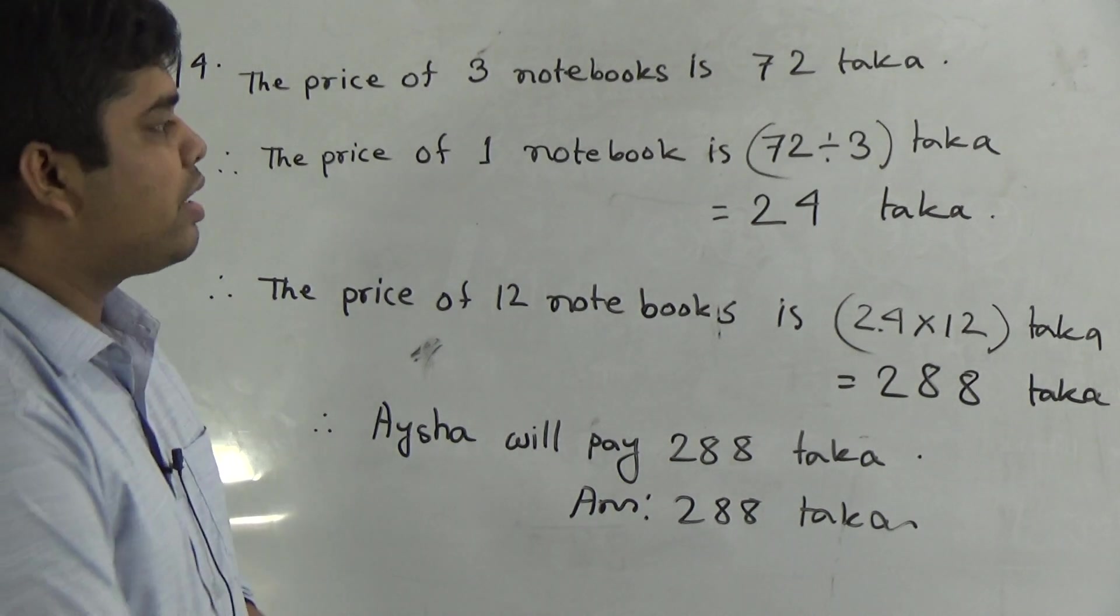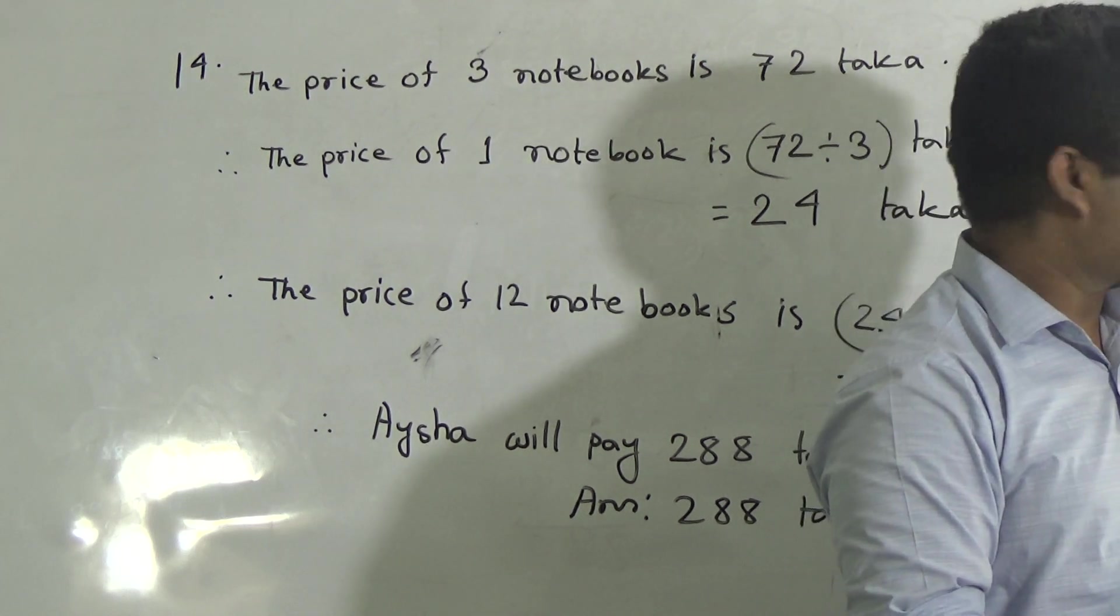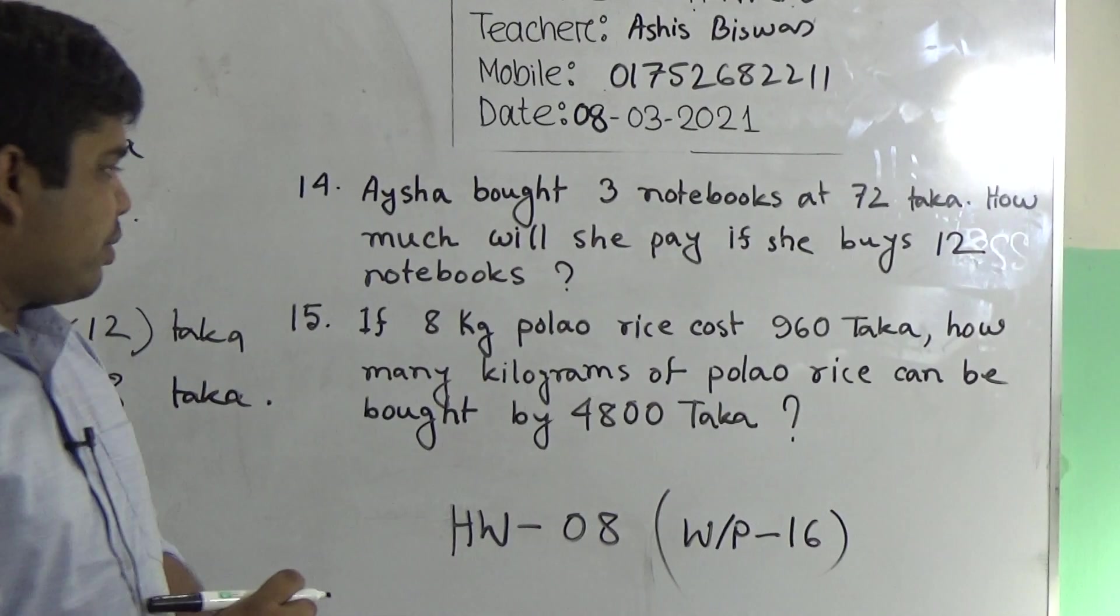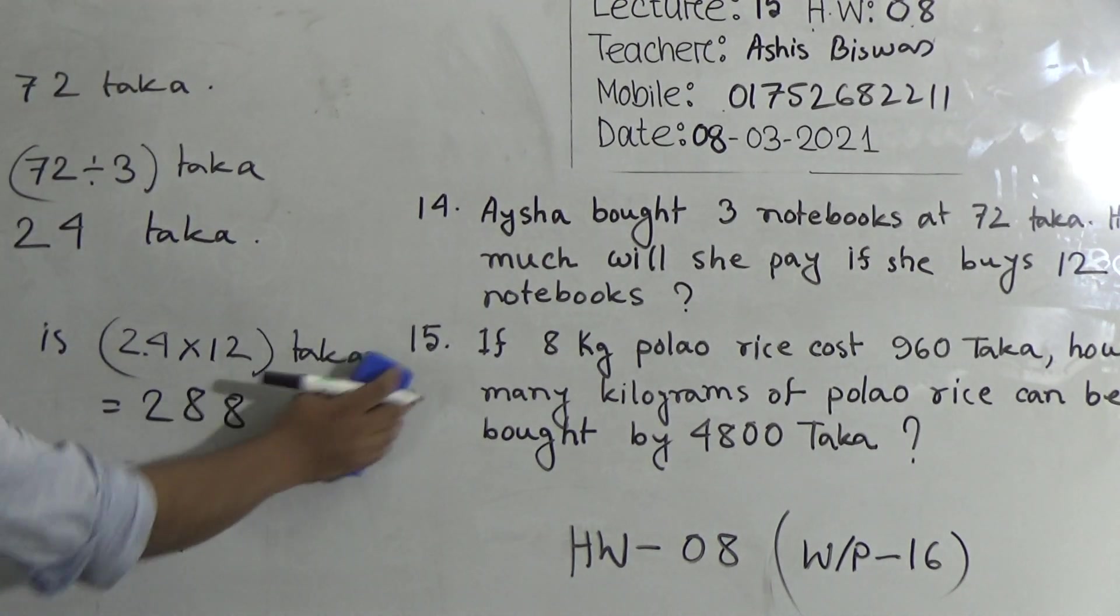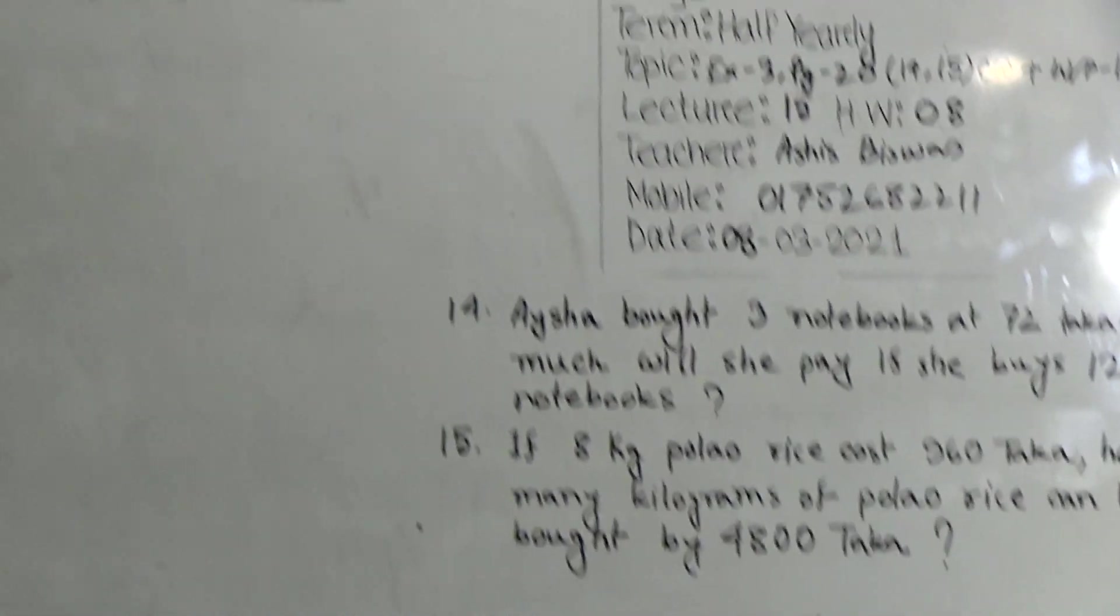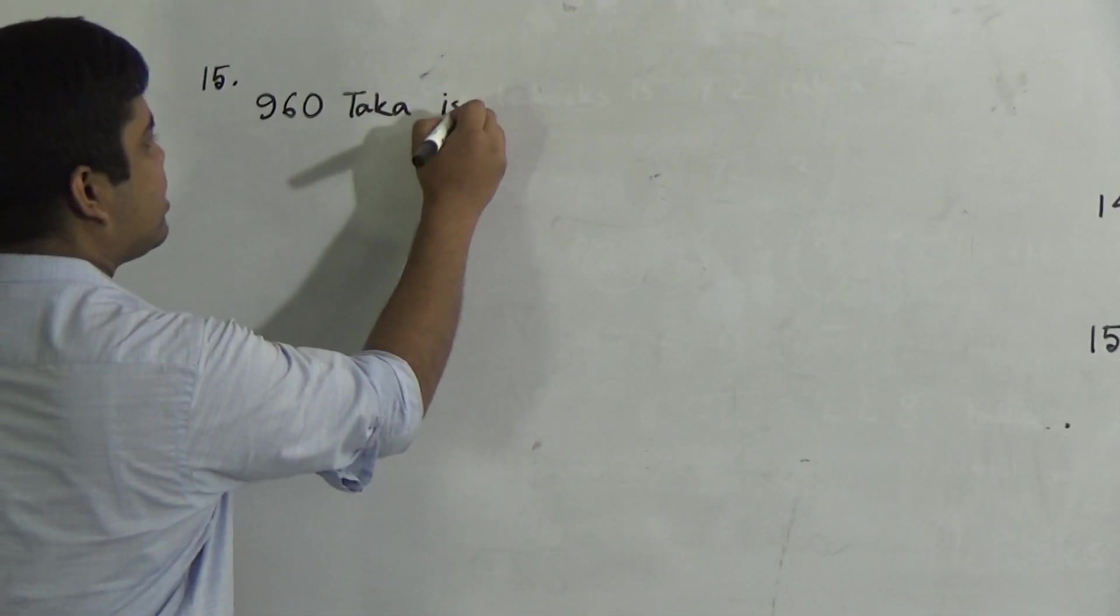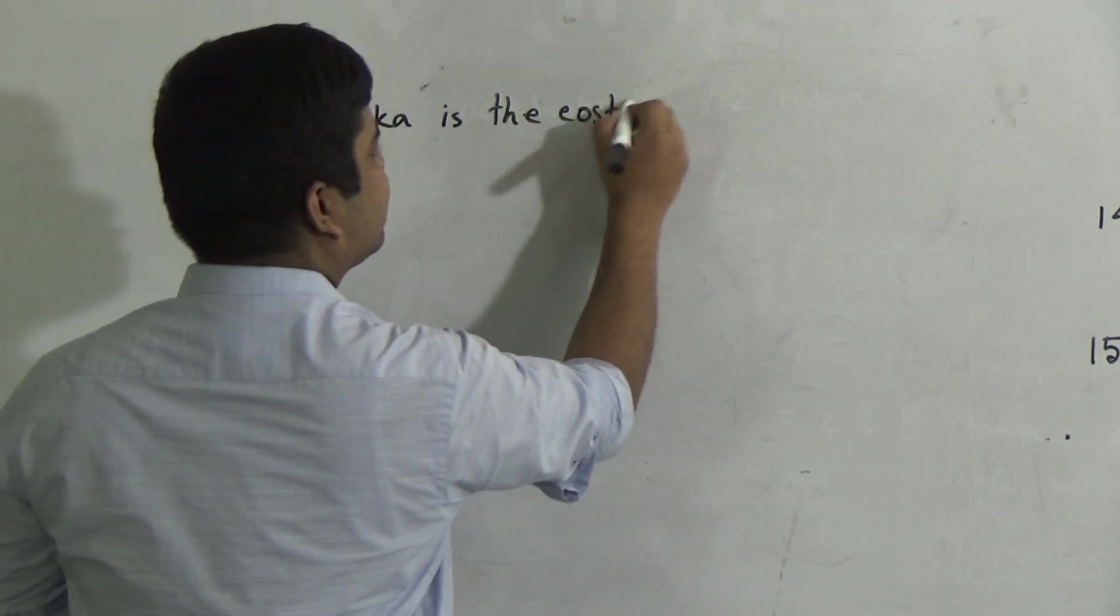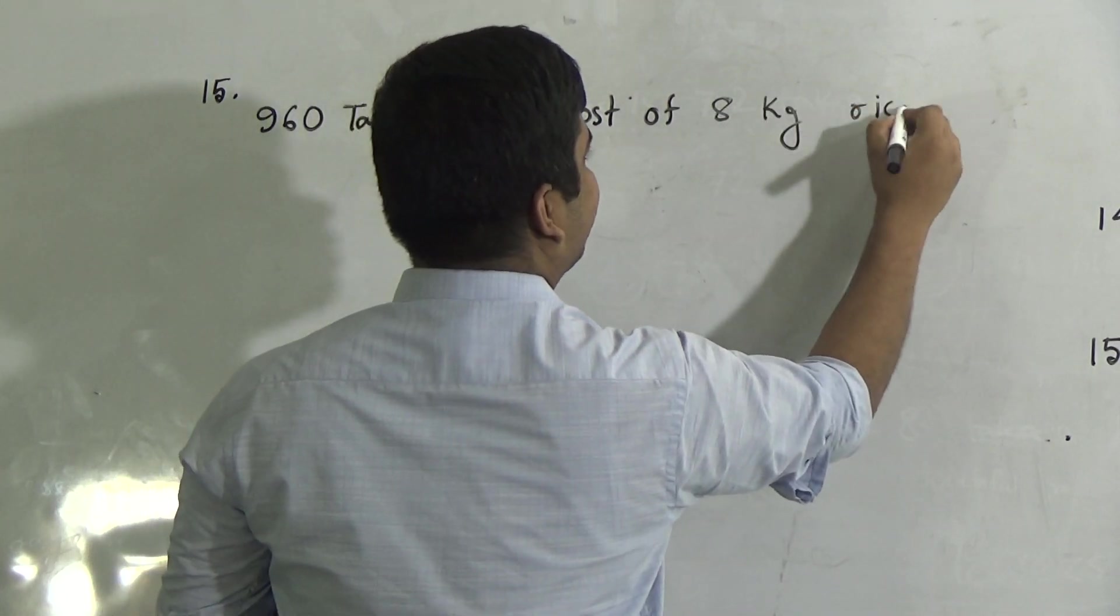Next, we shall solve question number 15. Here, question number 15 is, if 8 kg palao rice cost 960 taka, how many kilograms of palao rice can be bought by 4800 taka? So now we shall solve, we shall use here unitary process.